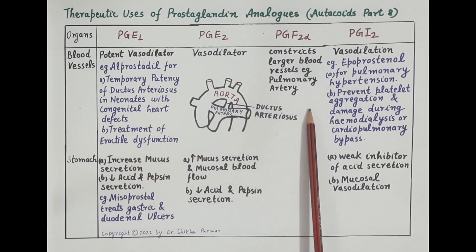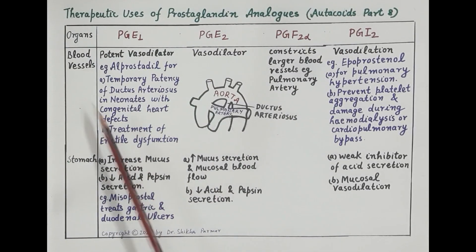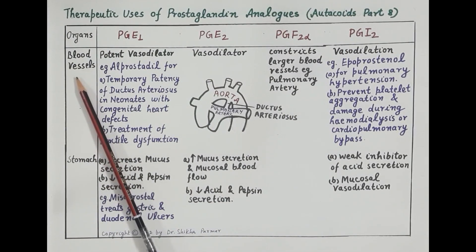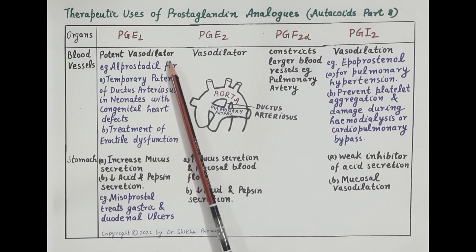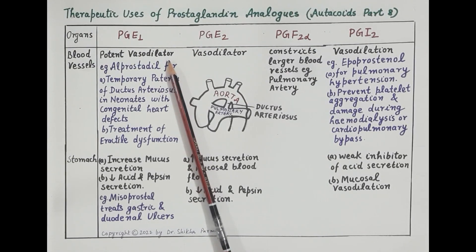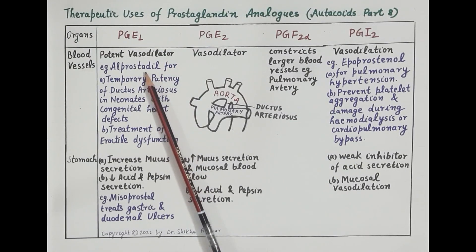Let's first study the effect of these prostaglandins on different organs. The first is the effect on blood vessels. Prostaglandin E1 is a potent vasodilator — it dilates blood vessels, increasing their diameter and thereby increasing blood flow to the area supplied.